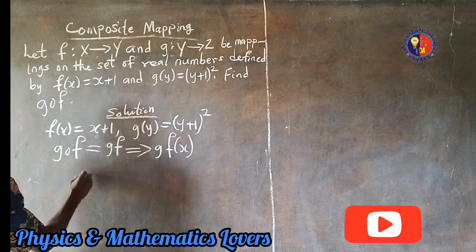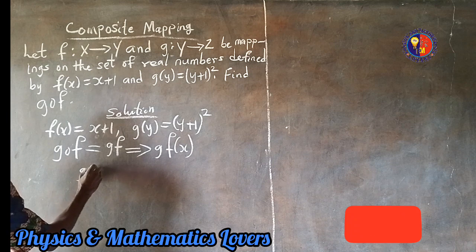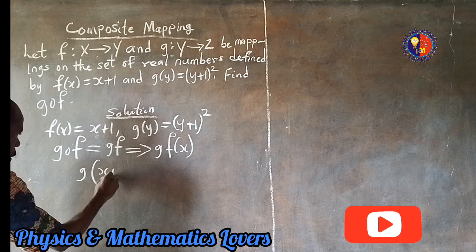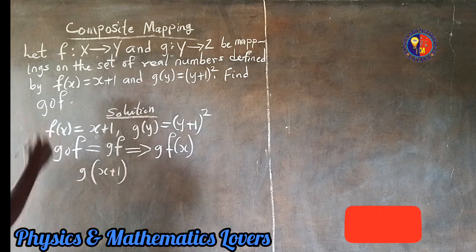So at the end of the day, it's now giving us, it's now given g now functioning. What is the value for f(x)? It's x plus 1. Okay.